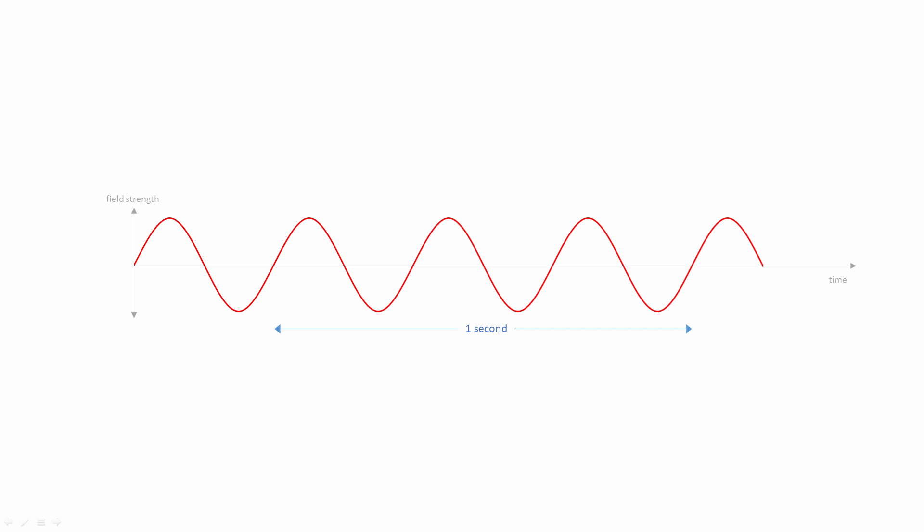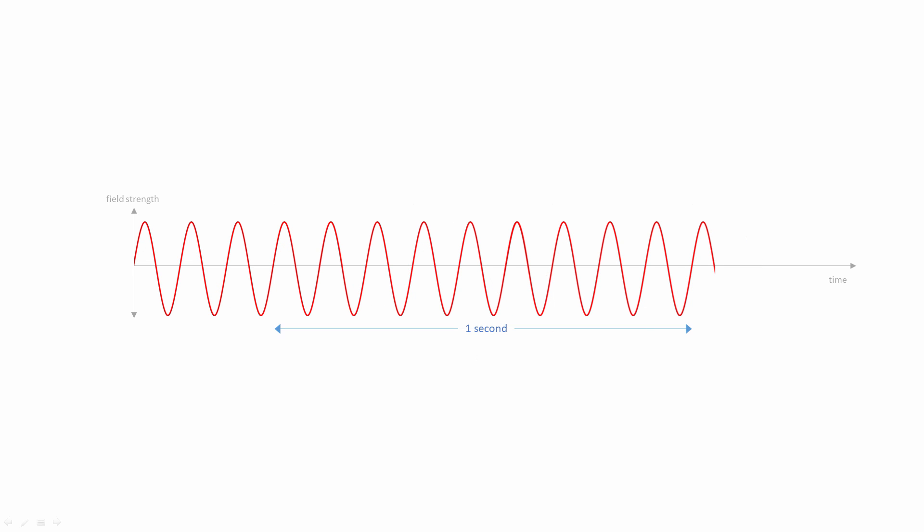The number of cycles per second is called the frequency of the wave. The standard unit of frequency is the hertz. So this graph represents a wave that's oscillating at a higher frequency. There are more cycles per second. Notice that if the frequency is higher, the wavelength is shorter.